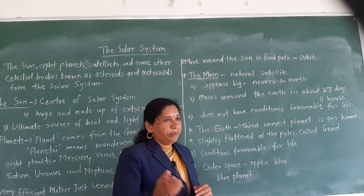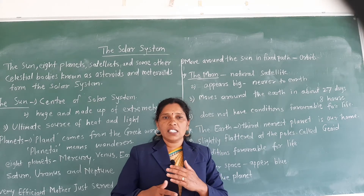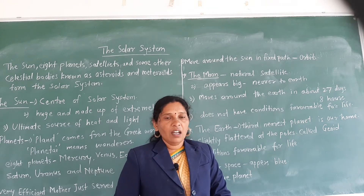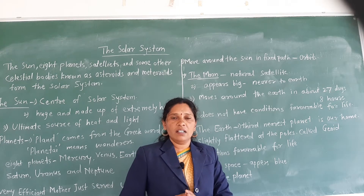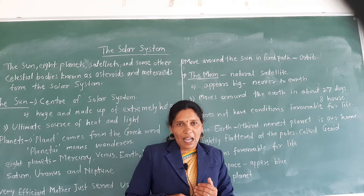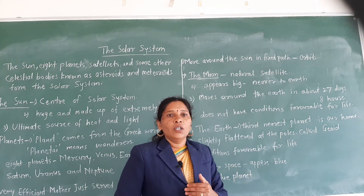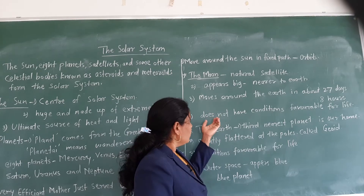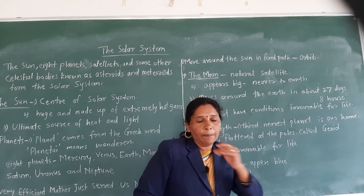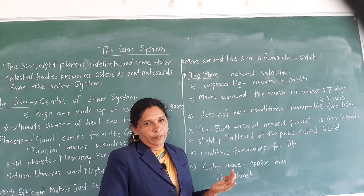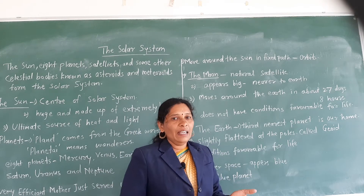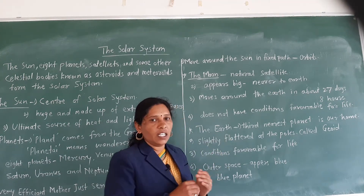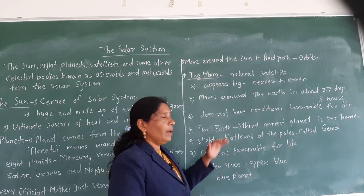On one night we can see the full moon, which is called Pournima. After about fifteen nights we can see the new moon, which is called Amavasya. The moon does not have conditions favorable for life — there is no air and no water on the moon, so life cannot be possible there.